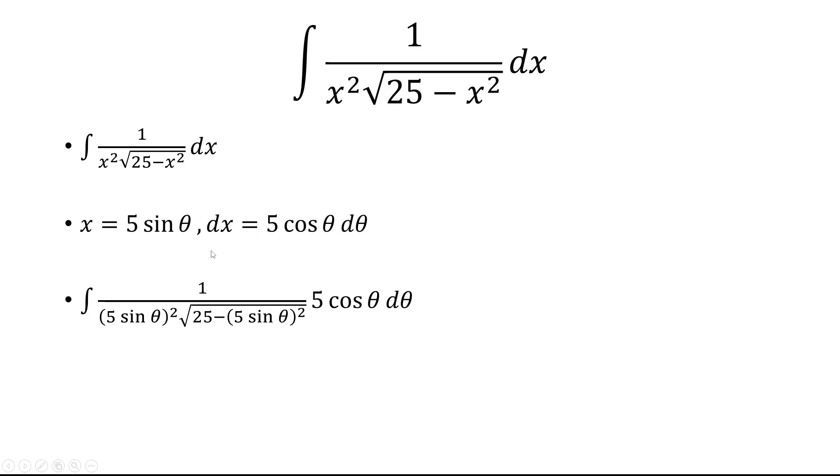So we'll replace x with 5 sine theta. So we have 1 over 5 sine theta squared times the square root of 25 minus the quantity 5 sine theta squared, and then times 5 cosine theta d theta.